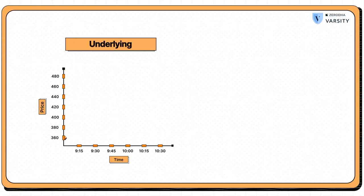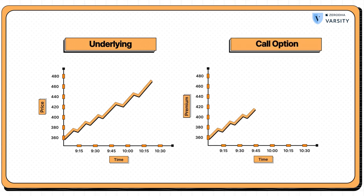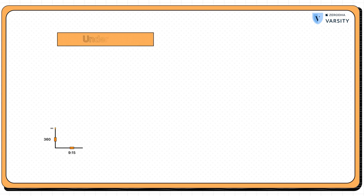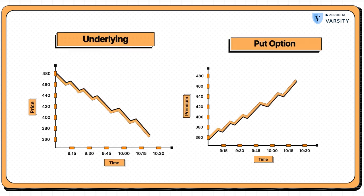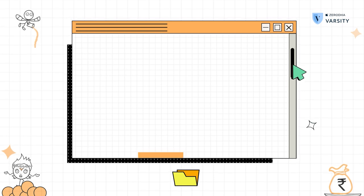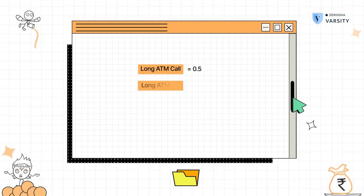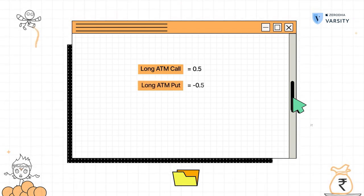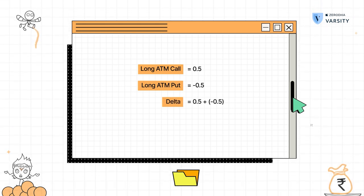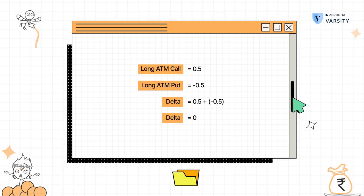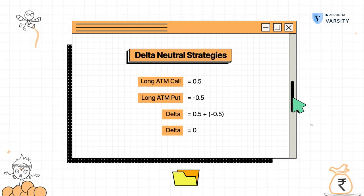In a long straddle, you simply buy an ATM call and put option. After you buy, if the stock price increases, then the position on the long call starts to make money. But if the stock price decreases, then the put option will start making money. Think about the deltas here — we are buying an ATM call and ATM put. The ATM call option will have a delta of 0.5 and the ATM put option will have a delta of negative 0.5. So plus 0.5 minus 0.5 — the overall delta is zero. Whenever the overall delta is zero, such positions are called delta-neutral.